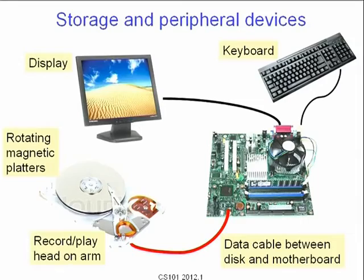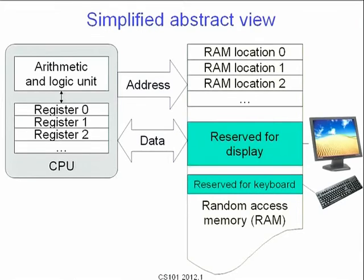You also see connectors at the back of the motherboard where we connect a monitor or display, keyboard, mouse, and so on — these are input-output devices. You communicate with the computer through these peripheral devices. So that's a physical layout. Can we build a logical abstraction of what a computer should look like to a programmer? Here's a simplified abstract view — I'm hiding a lot of detail here.